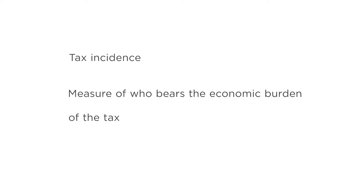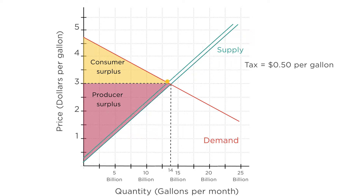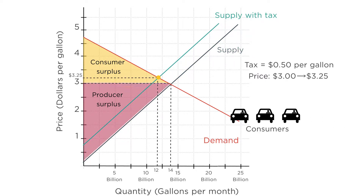Let's come back to the gas market example. We start with producers earning $3 per gallon and consumers paying $3 per gallon. Then the government imposes the 50-cent tax and we end up with a price of $3.25. So consumers bear some of the tax — they have to pay an extra $0.25 per gallon of gas they buy. Even though consumers aren't sending any money to the government, they have to pay more as a result of the tax. Therefore, consumers bear some of the economic burden of the tax, or the tax incidence.